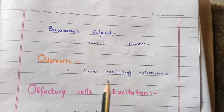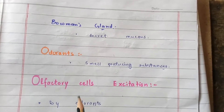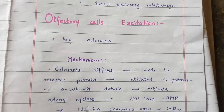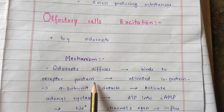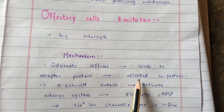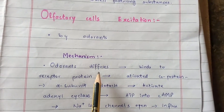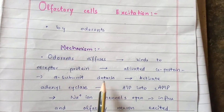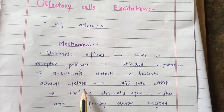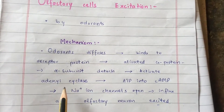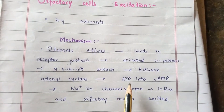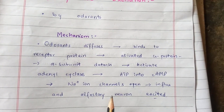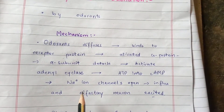When the odorants diffuse in, they bind to the receptor protein present on the cell membrane. The inner portion of the receptor protein attaches with the G protein, which is activated by the binding of the odorant to the receptor protein. The activated G protein detaches the alpha subunit and activates adenyl cyclase. Adenyl cyclase is a receptor protein present in the cell membrane which catalyzes the conversion of ATP into cyclic AMP.